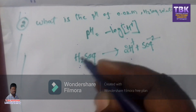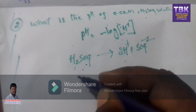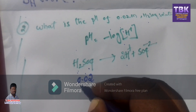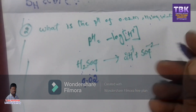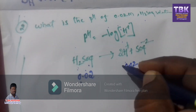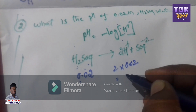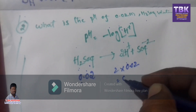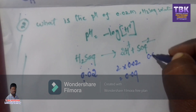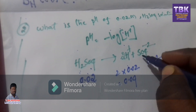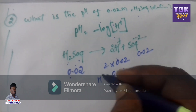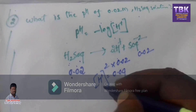H₂SO₄ splits into H⁺ ions. 1 H₂SO₄ produces 2 H⁺ ions. So the concentration of H⁺ ion is 0.04, and the SO₄²⁻ ion concentration is 0.02 because it produces only 1 sulfate ion. Therefore the concentration of H⁺ ion is 0.04.